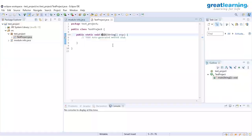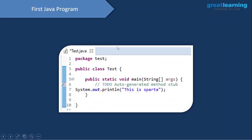Now that we've installed Eclipse and seen how it looks, let's write our first Java program. We've already created our package, our class, and we have the main function inside our class. The class keyword means everything in Java must be inside a class. By convention, the class name starts with a capital letter. We also have an access modifier — 'public' — meaning this class can be accessed by everyone in the program.